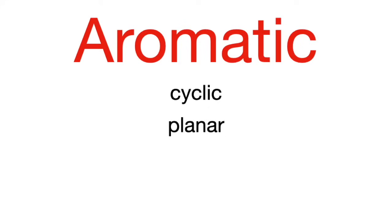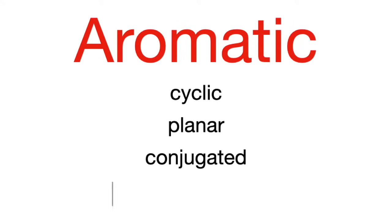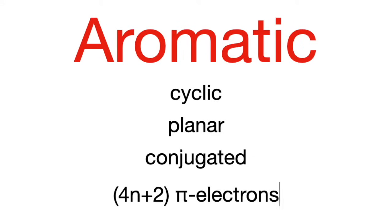Aromatic compounds must be cyclic, meaning they form ring structures. They must be planar, meaning flat — no wedges or dashes or three-dimension. And they must be conjugated, meaning they have alternating single bonds with pi electrons. And finally, they must have 4n plus 2 pi electrons total.